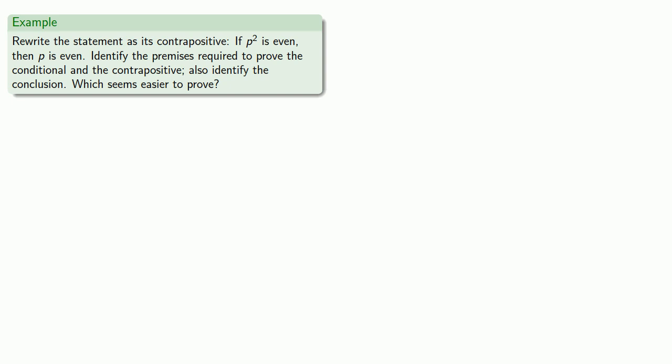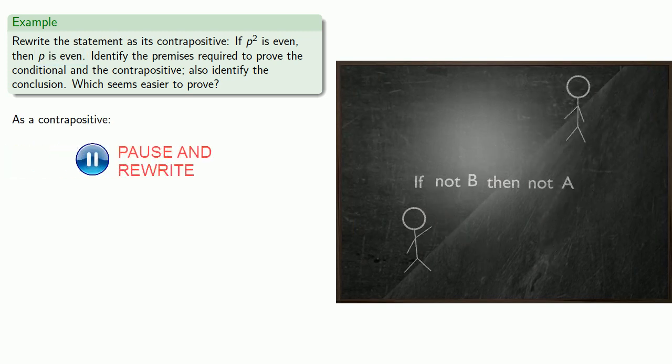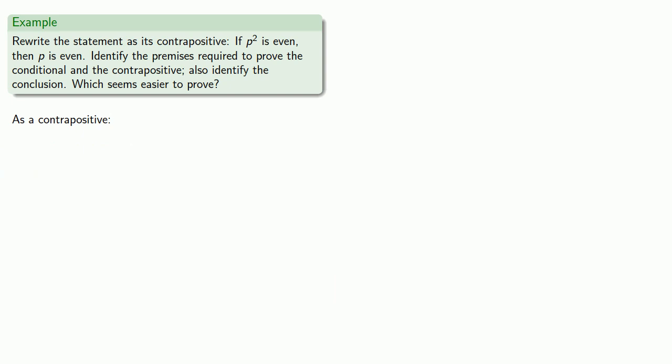So we have our antecedent, p² is even, and our consequent, p is even, so the contrapositive, we switch and negate them. So as a contrapositive, if p is not even, then p² is not even.